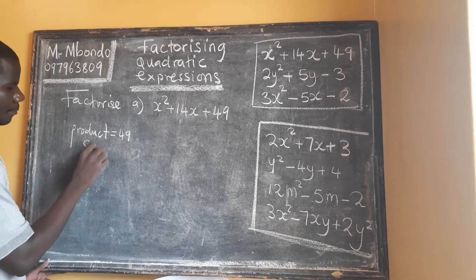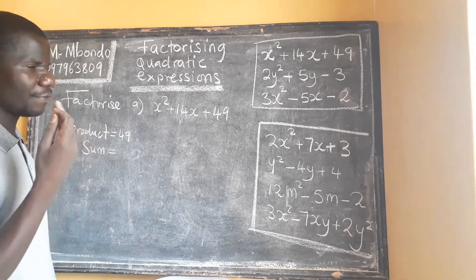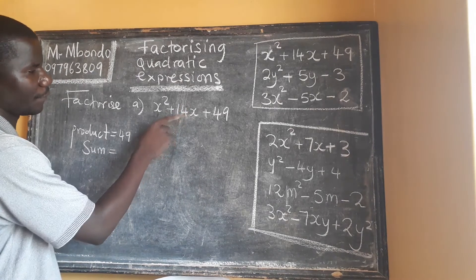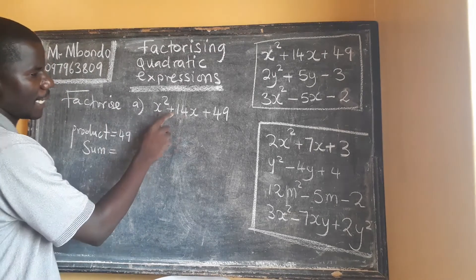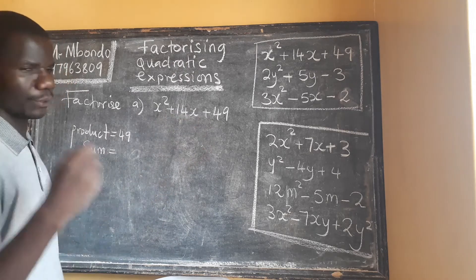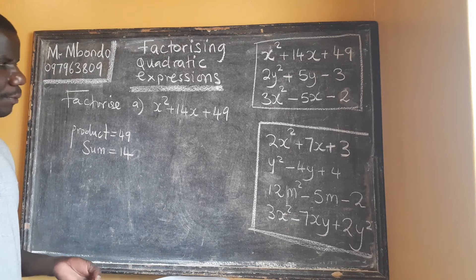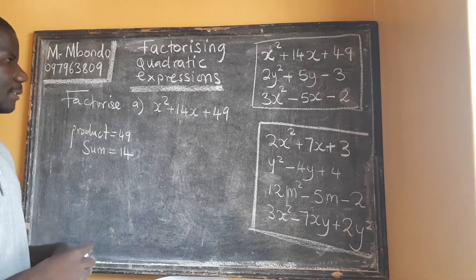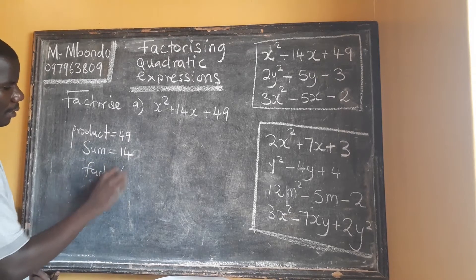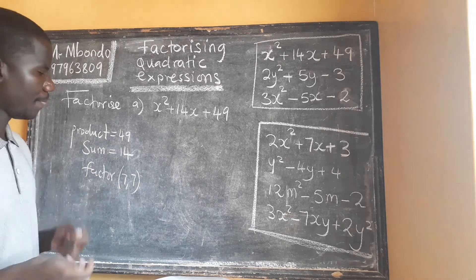For the sum, we just pick the coefficient of the variable that is not squared — that is always our sum. So in this case our sum is 14. If this were a minus, don't forget to take it as minus 14. Now we need to find the factors: 7 and 7. When you multiply 7 by 7 you get 49, and when you add them you get 14.